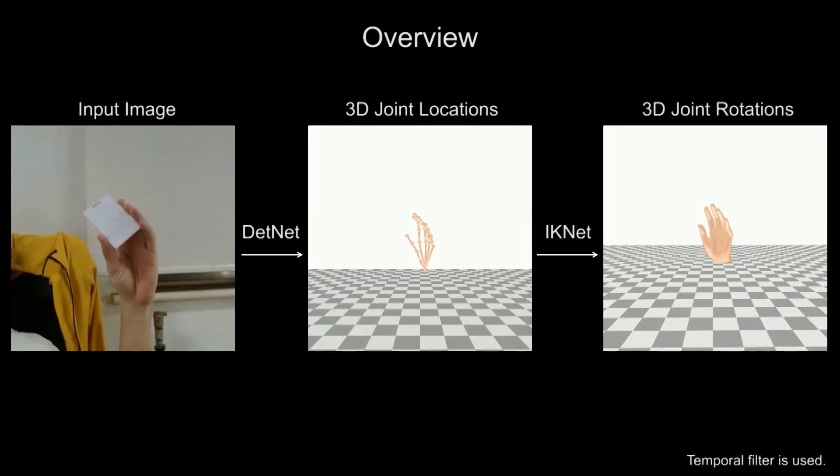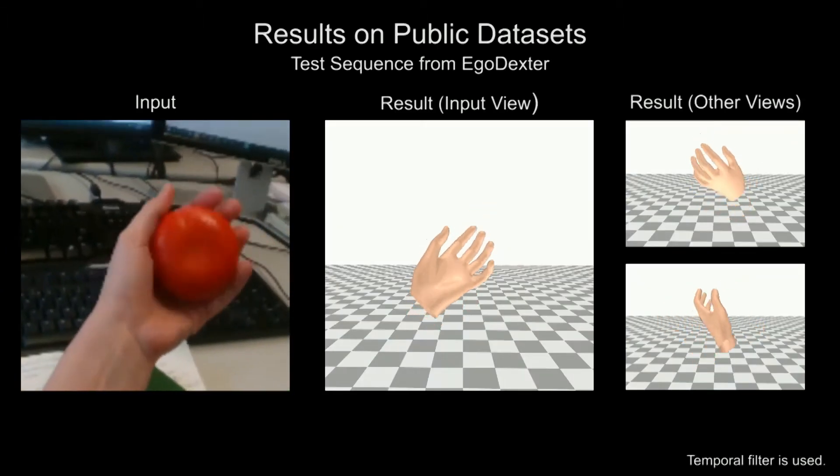The system estimates joint angles with two steps: the DetNet and the IKNet. The model is fully evaluated on public datasets.